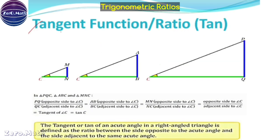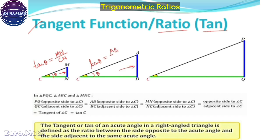Coming to the tangent function — tan theta is given by the perpendicular side divided by the adjacent side. For the first triangle, the perpendicular is MN divided by adjacent CN. For the second triangle, tan theta equals AB divided by BC. For the third triangle, the opposite side is PQ divided by adjacent side CQ.